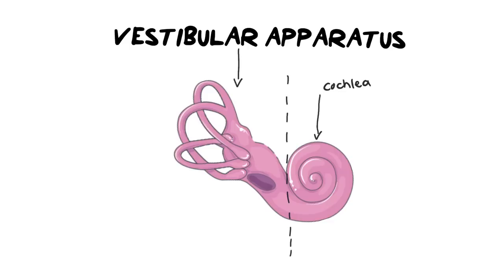By the end of this video, you should be able to answer these questions for full marks using all the correct terminology. One of the biggest misconceptions about the ear is that it is only there for hearing. In actual fact, it also enables us to maintain our posture — which means upright, like is your body standing upright or lying down. Balance and posture are not the same thing: posture is upright, while balance is when you are able to determine the speed or rate at which you are walking or moving.